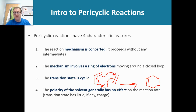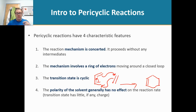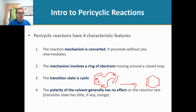The polarity of the solvent generally has no effect on pericyclic reactions. When we generate cations in other reactions, we have to choose a solvent that can influence the reaction. But in a pericyclic reaction, it doesn't matter if it's a polar protic or polar aprotic solvent, because there are no ions generated as intermediates for the solvent to interact with. That's another data point suggesting that pericyclic reactions do not generate any intermediates — it's all concerted and happens at the same time.